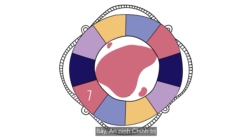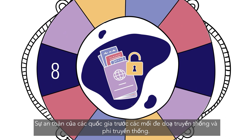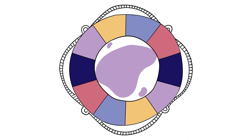7. Political security ensures basic human rights. 8. National security concerns the safety of countries from both traditional and non-traditional threats.